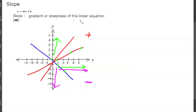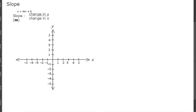So the slope is the gradient or steepness of the linear equation. When calculating m, it's going to be the change in Y over the change in X — that's the same thing as rise over run. Let's look at an equation from a previous video.